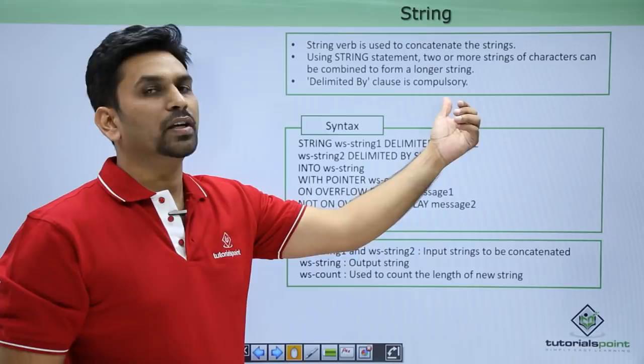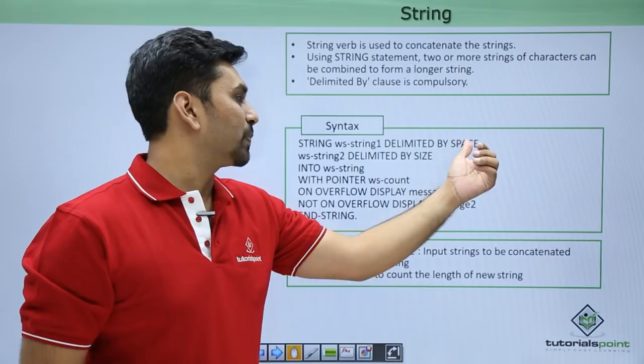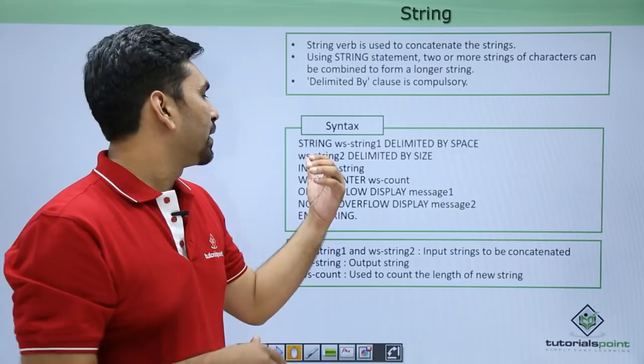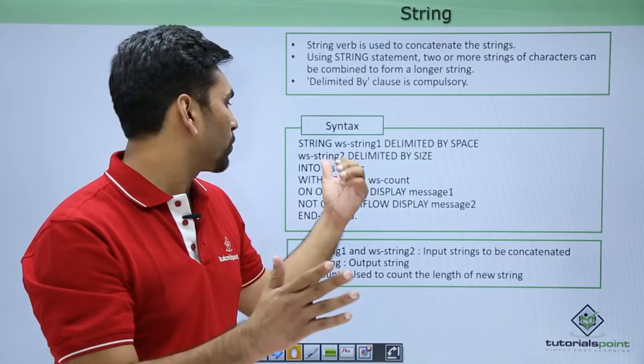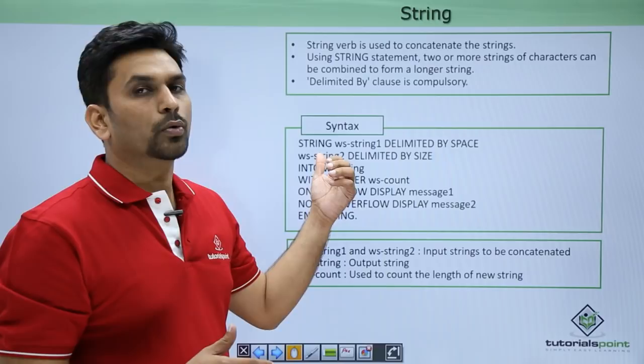Let's look at the STRING syntax. STRING W-STRING-1 DELIMITED BY SPACE means that when it encounters a space in string one, it will take that part. For the next item, DELIMITED BY SIZE means it will take the complete string W-STRING-2 irrespective of spaces, taking all the bytes. It will then concatenate these two strings and put the result in W-STRING.